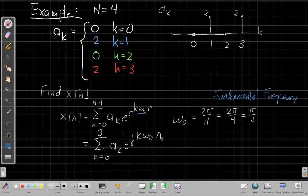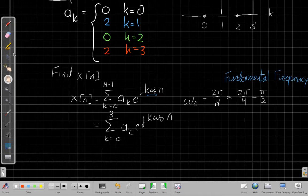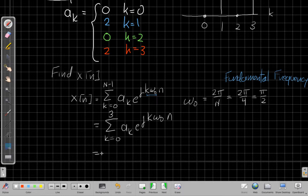So you get x of k goes from 0 to n minus 1 is now 3 because the period was 4. A sub k, e to the j k times omega 0 times n. So each of these is a time signal, they each depend on n, so I'm adding these different signals together to get my result. And then the next step is basically just write out this sum explicitly, term by term. A sigma like this is like a for loop, saying for k equals 0 to 3, stepping through each term and adding them up.